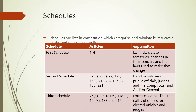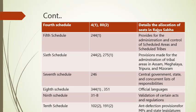The third schedule includes articles 75(4), 99, 124(6), 148(2), 164(3), 188, and 219. It explains the forms of oaths and lists the oaths of offices for elected officials and judges. The fourth schedule includes articles 4(a) and 80, and details the allocation of seats in the Rajya Sabha.